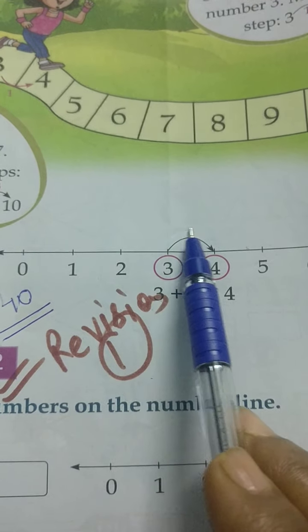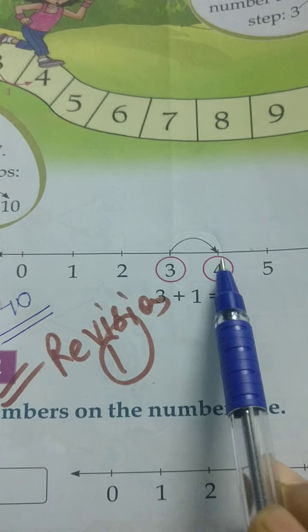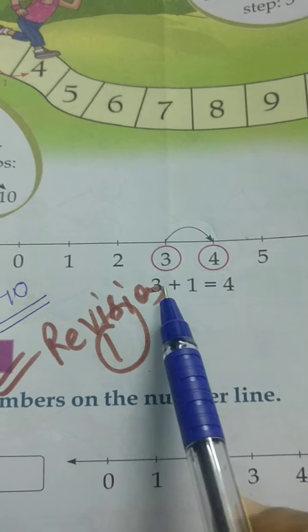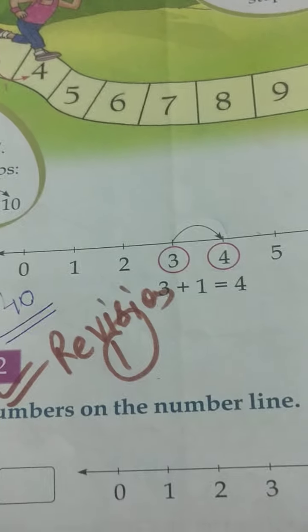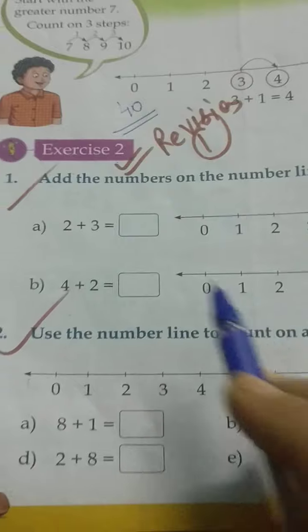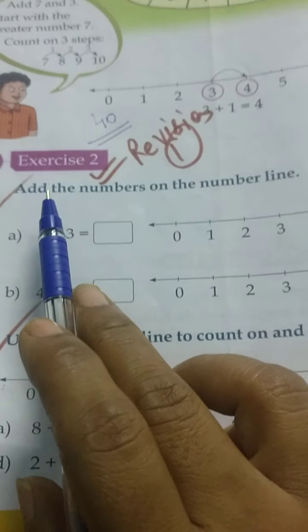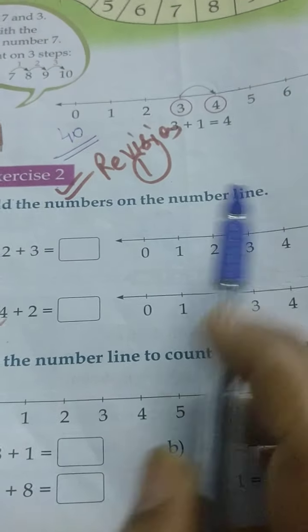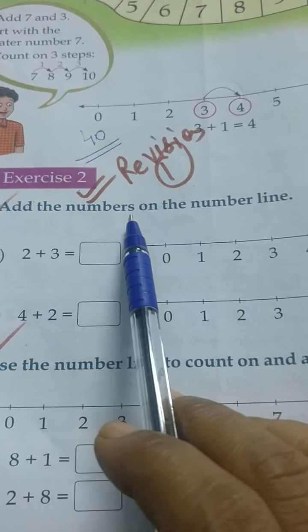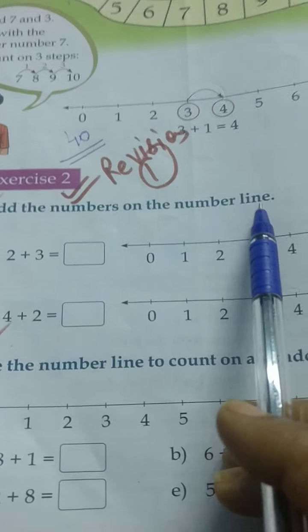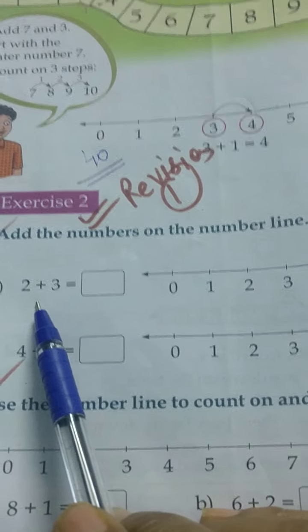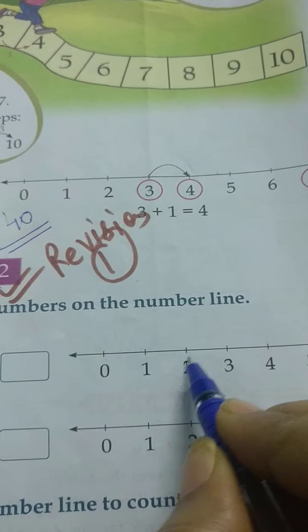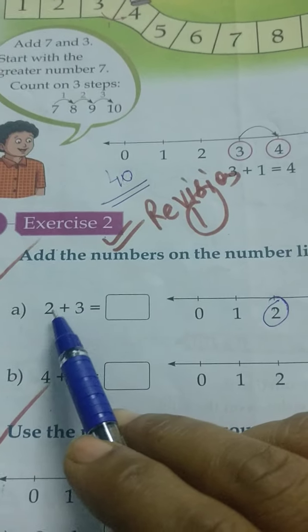We stop at 4. Circle the 4. So 3 plus 1 equals 4. Now I'll explain the first question: add the numbers on the number line. See, there's 2. On this number line, find 2 and make a circle on it.